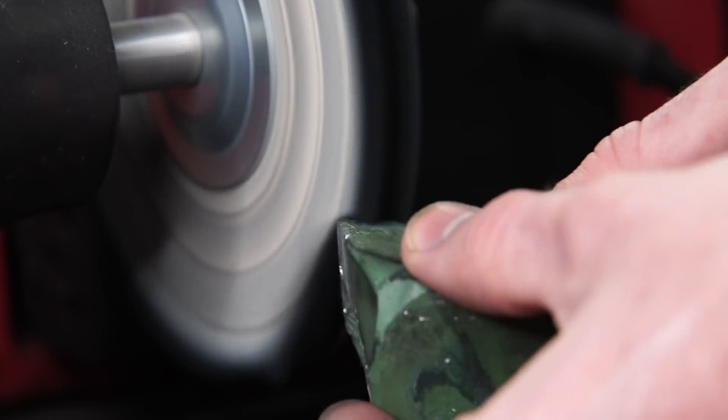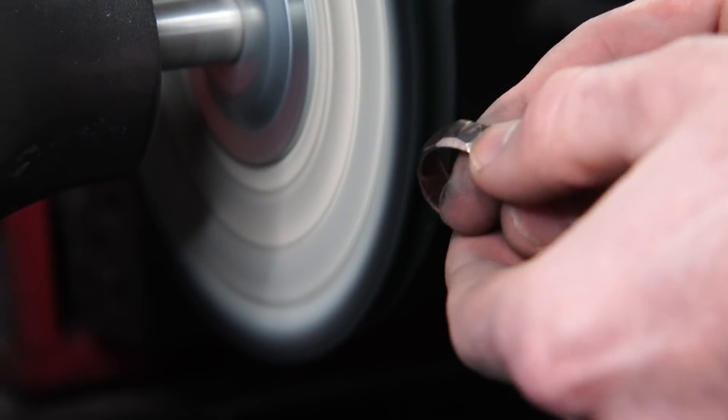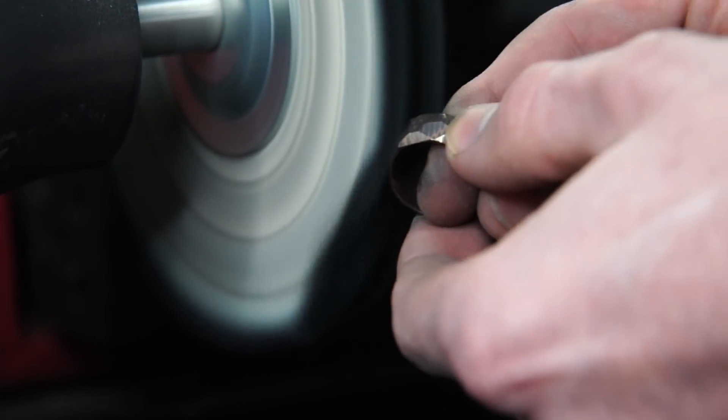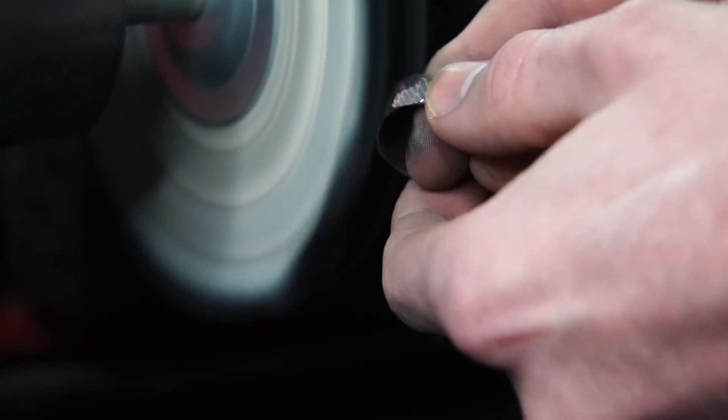Then I finish up with this fine green polish and I'm just spending a really long time here just because I want to make sure this thing is really nice and smooth, it's not going to snag on anything, and to give it just a really nice polished and reflective look.